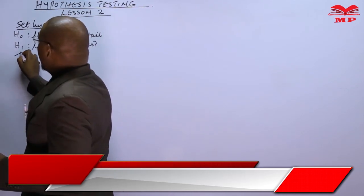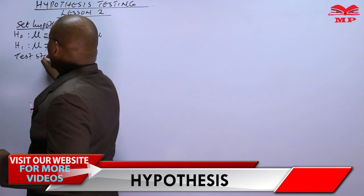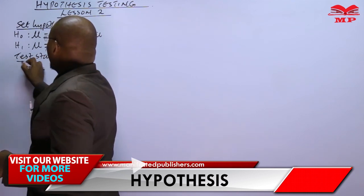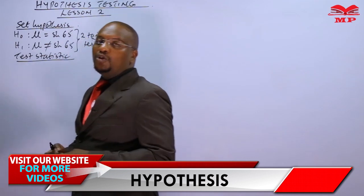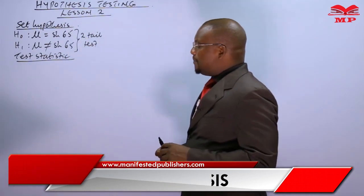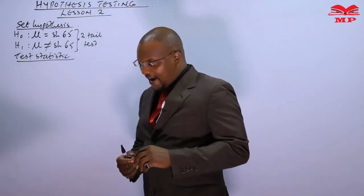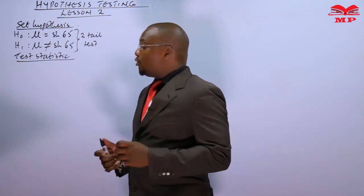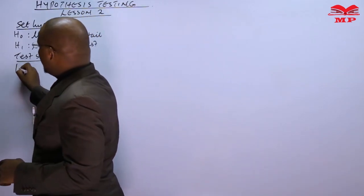The next step is to get the test statistic. We will not use z because our number of prices is not more than 30, so we are going to use t.